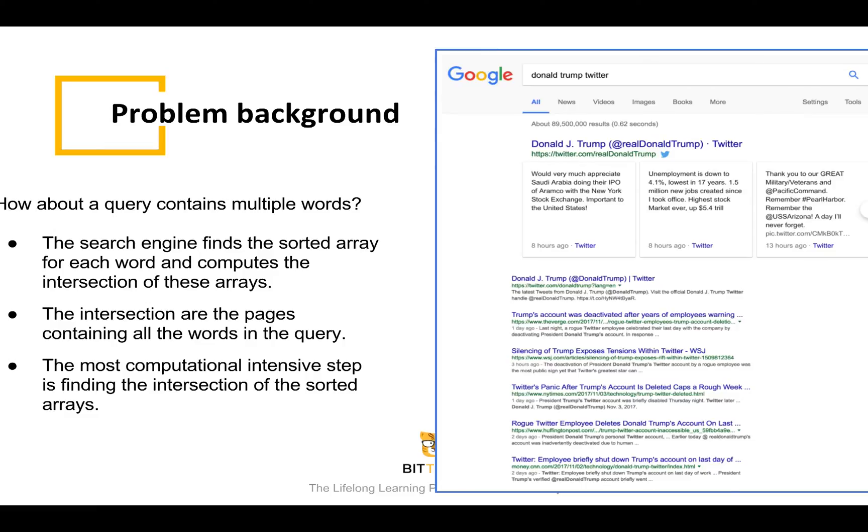The intersection are the pages that contain all the words in the query. Among all the processes, finding the intersection of the inverted indices of all the individual words is the most computationally intensive step. A good algorithm may significantly reduce the computational time. This problem is a typical use case for the intersection of sorted arrays in a search engine. I hope this provides some context as to why this problem is important.